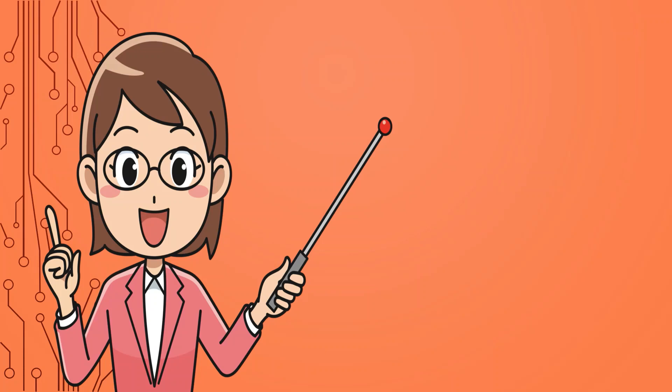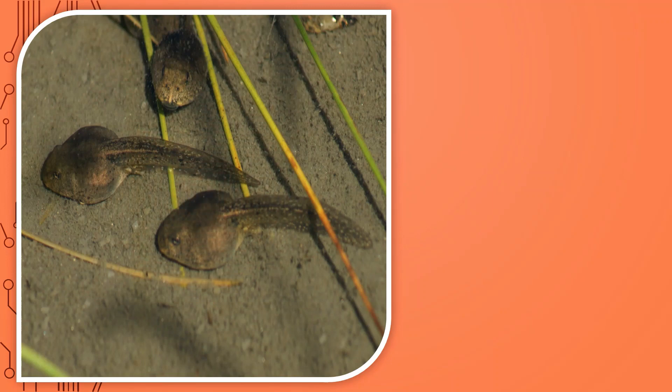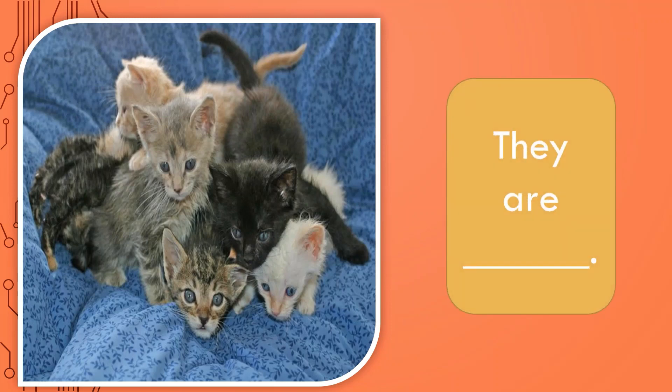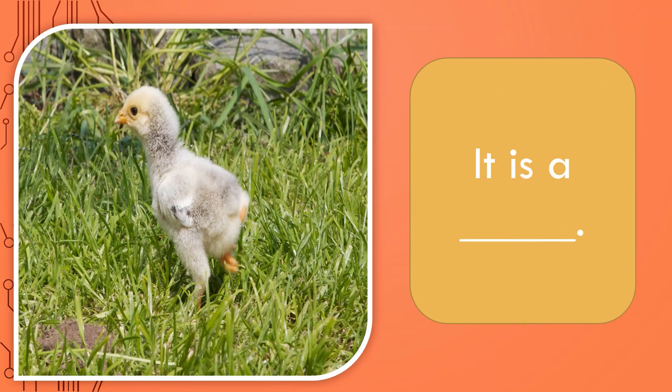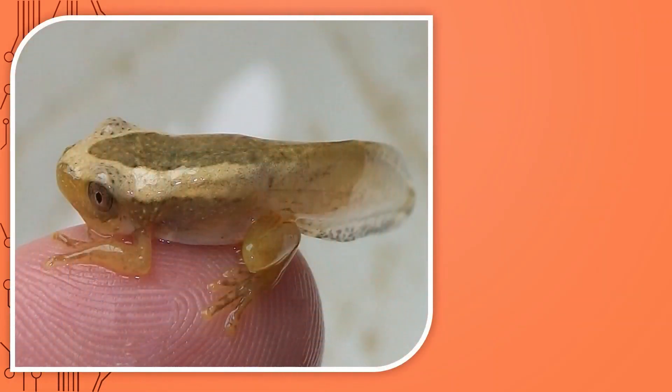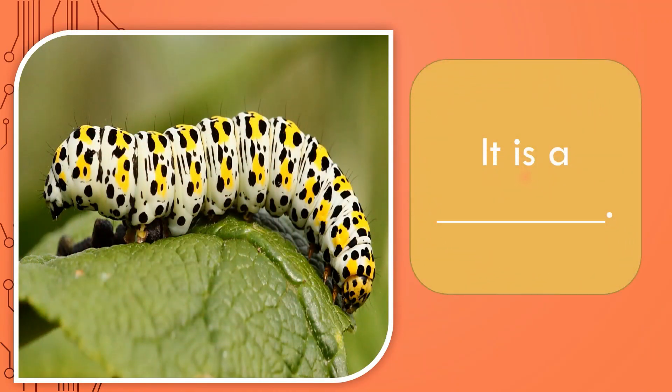Now it's your turn to answer the questions. Name the pictures shown. It's a young frog. It is a caterpillar. Very good.